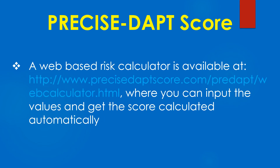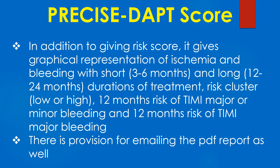A web-based risk calculator is available where you can input the values and get the score calculated automatically. In addition to giving a risk score, it provides graphical representation of ischemia and bleeding with short and long durations of treatment, risk cluster, 12-month risk of TIMI major or minor bleeding, and 12-month risk of TIMI major bleeding. There is provision for emailing the PDF report as well.